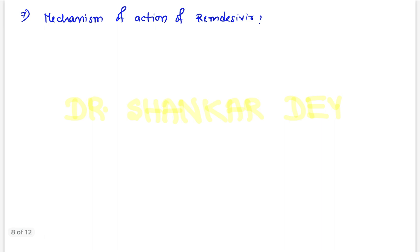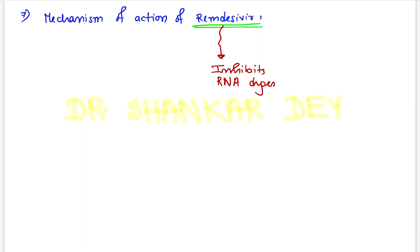Next: what is the mechanism of action of Remdesivir? This is a very popular drug from the COVID era. The question is whether it inhibits RNA-dependent RNA polymerase, DNA-dependent RNA polymerase, or DNA-dependent DNA polymerase. Remdesivir inhibits RNA-dependent RNA polymerase enzyme. So this is the answer.